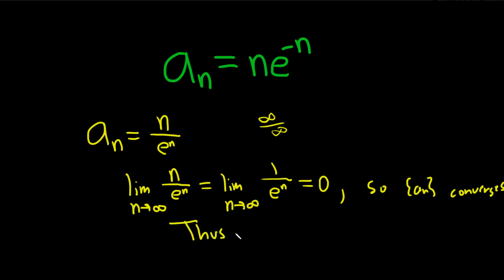So thus, a sub n is bounded. So we've shown that it is bounded. So if you're ever trying to show that something is bounded, you can just take the limit. And if you get a number, like if it converges, if your sequence converges, it's bounded.